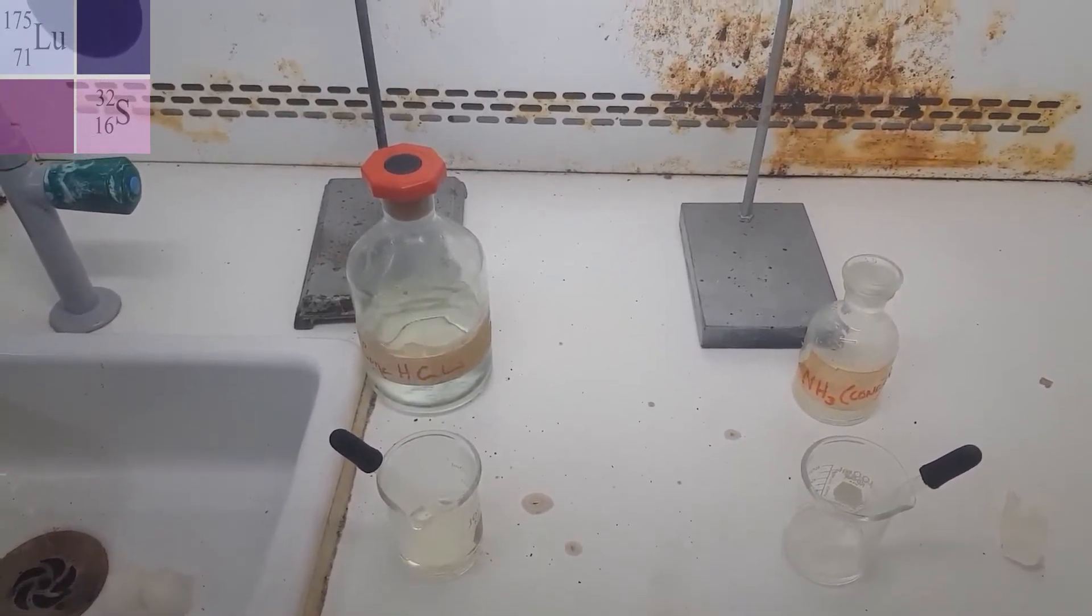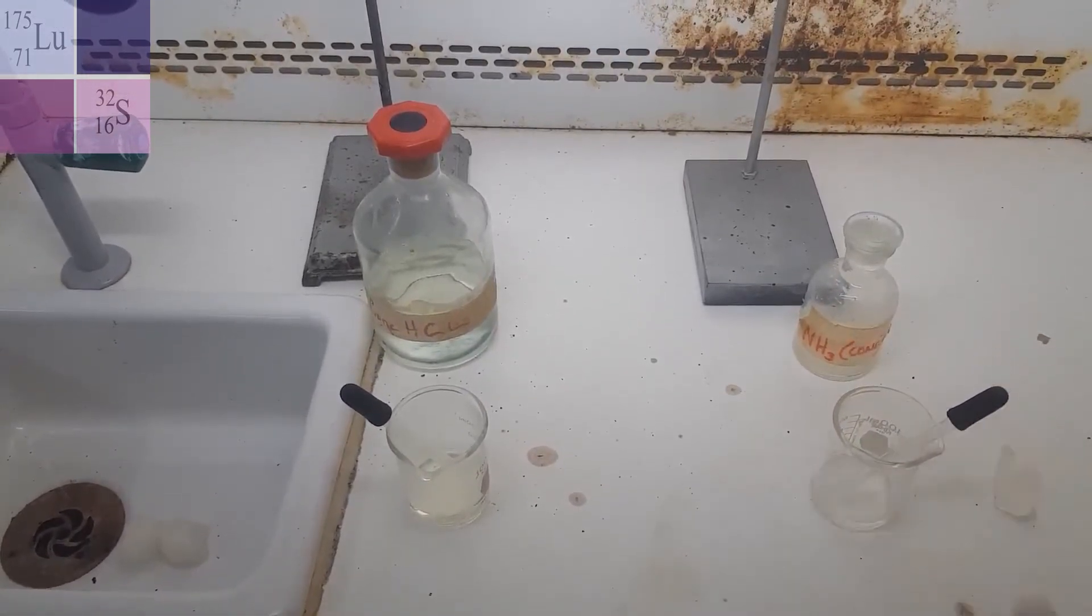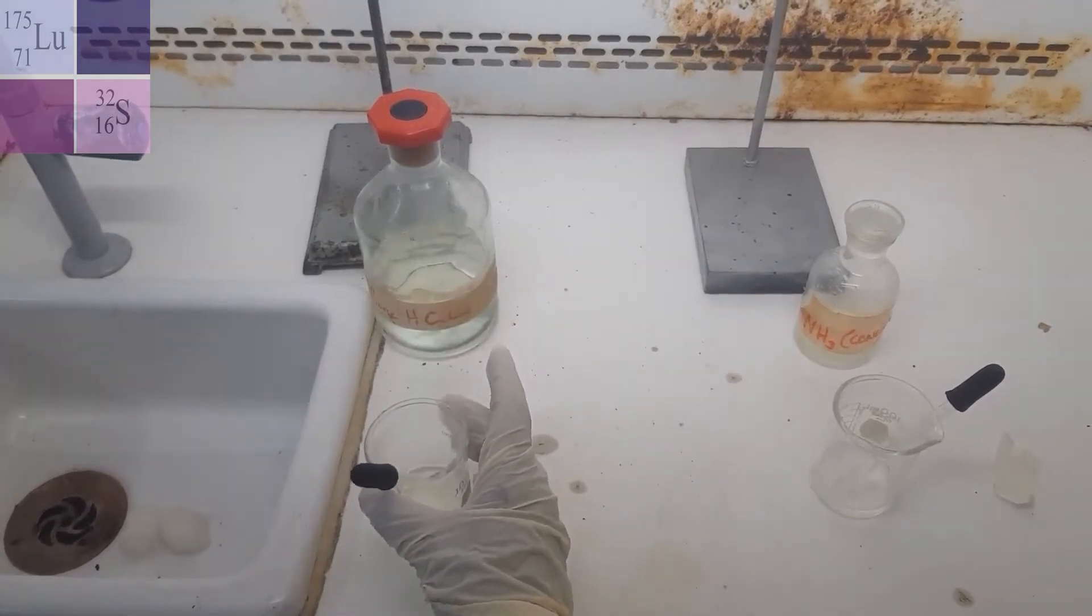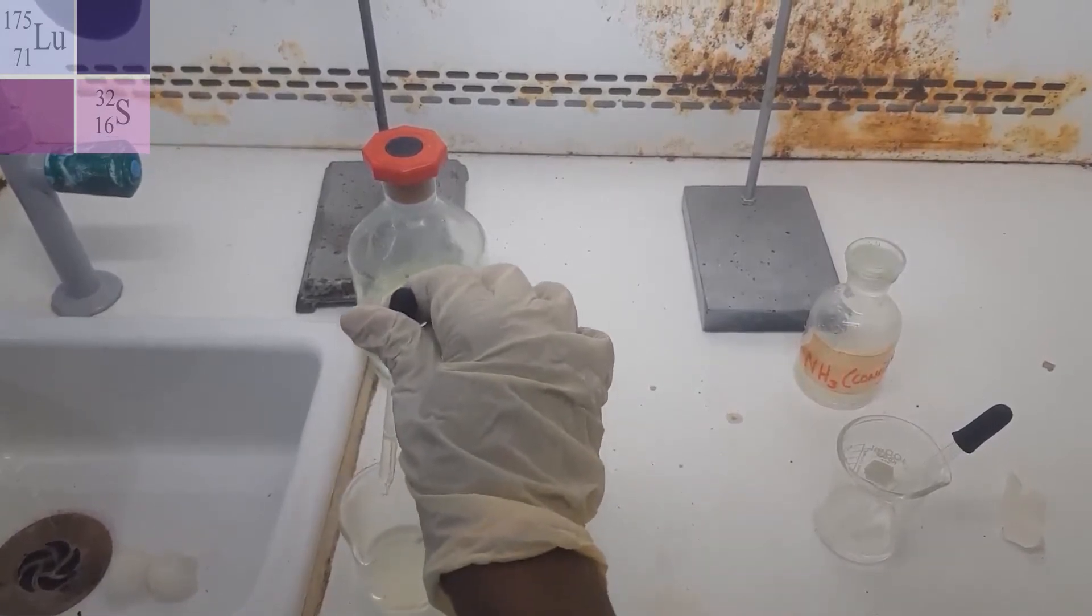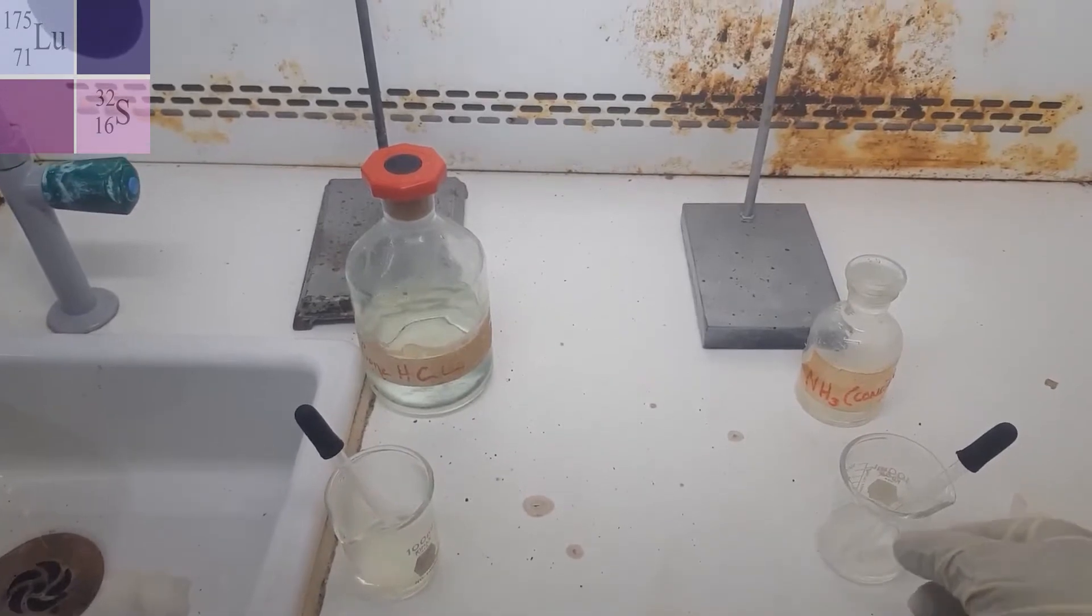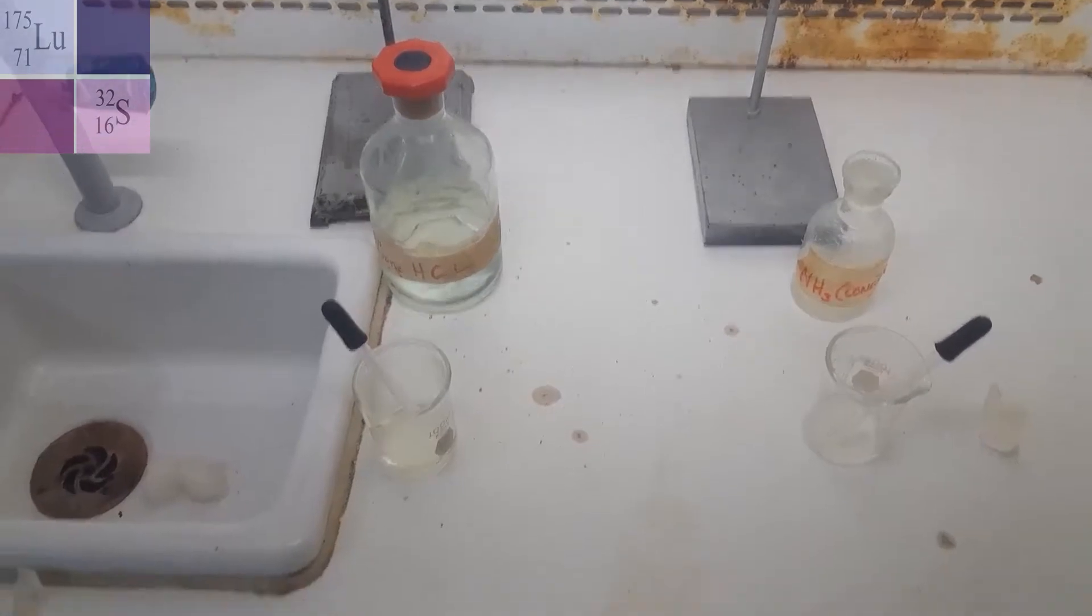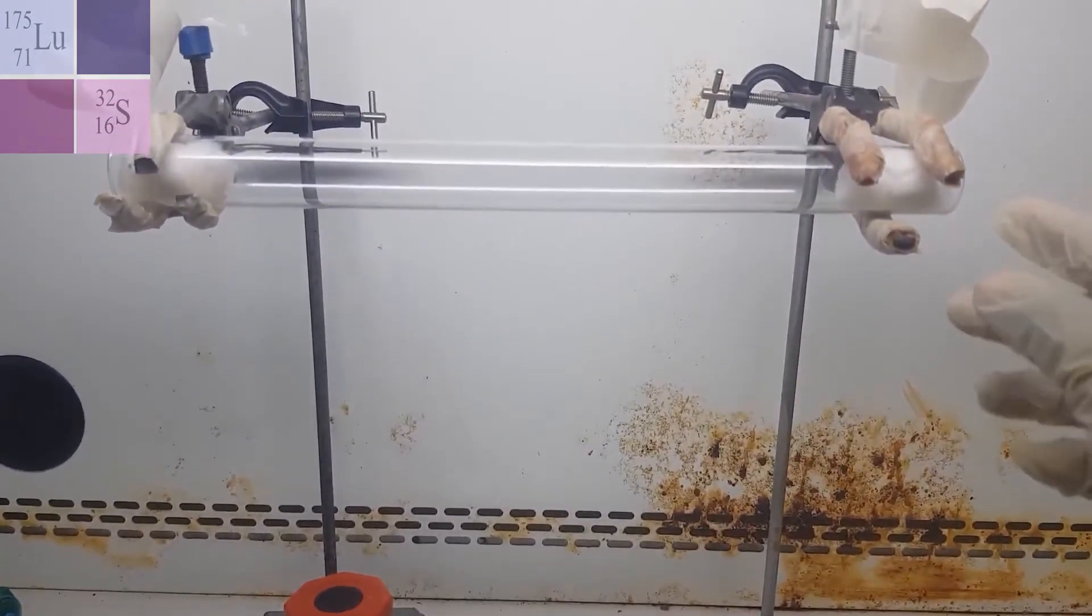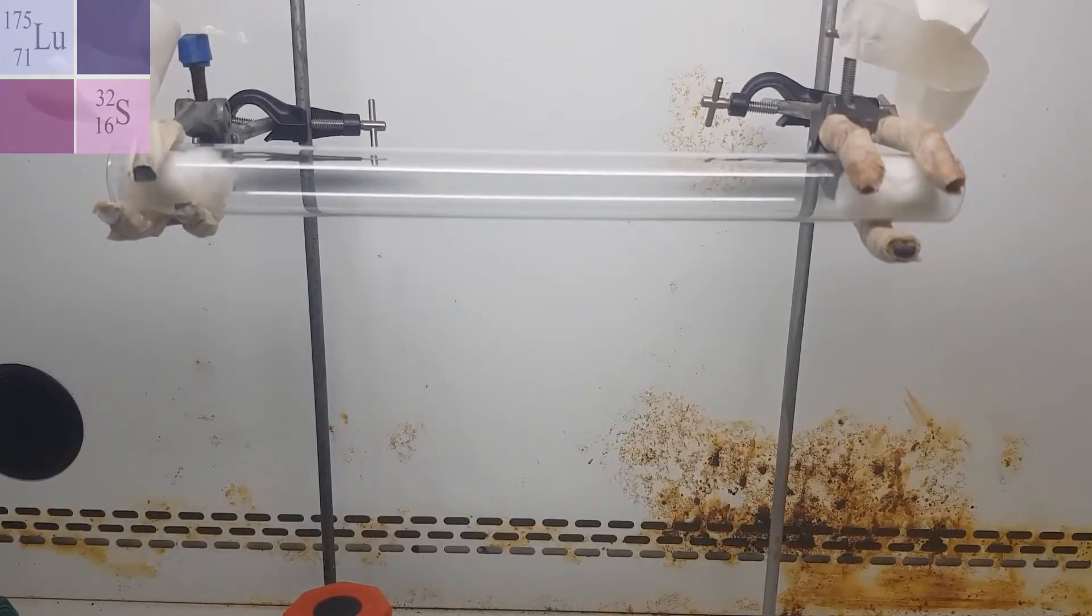So what I have prepared here is two beakers. This beaker containing the concentrated ammonia, dropper containing it, and this beaker contains the concentrated HCl, a dropper of that HCl. And what we are going to do, we are going to, at the same time, take each of these droppers and place a few drops of each substance into our setup here, but at the same time, because it's a race, we need the race to be fair.